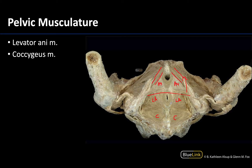The levator ani is going to be near the external anal sphincter, which is right in this region, and it will have certain muscle fibers that surround the vaginal orifice and the urethral orifice as well. So it will be larger than what you can actually see on this particular image, but I like this image because it gives you a good idea of this musculature from a lithotomy position.